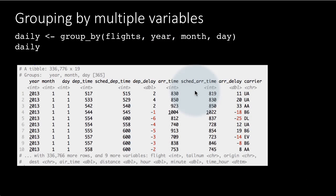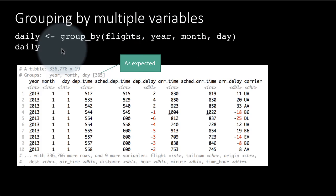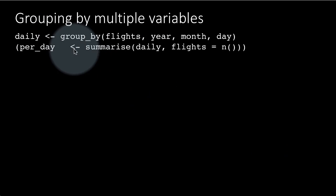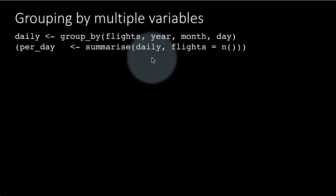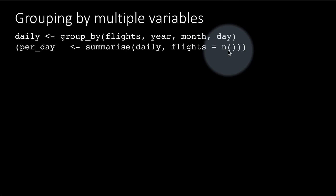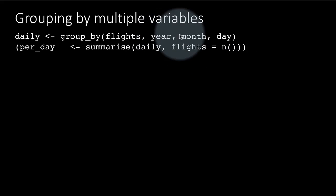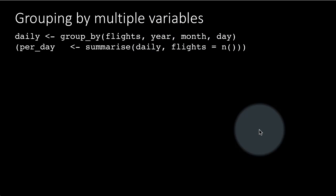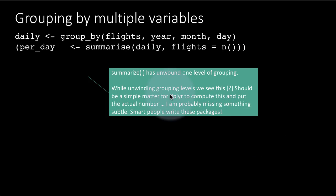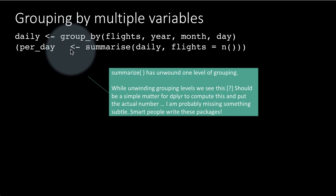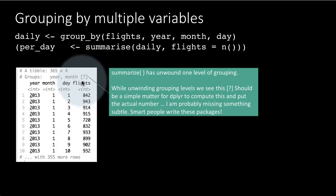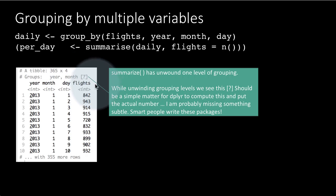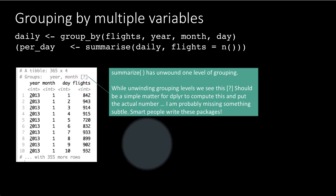Now, grouping by multiple variables — we've already seen this. 'daily' is grouped by year, month, and day and of course there are 365 groups. You can find the per-day flights by saying: per_day equals summarize(daily, flights = n()). Remember n() tells you how many rows there are, so for each day it finds out how many flights there are. After summarize, one level of grouping is unbound — per_day is now grouped by year and month alone, because there is only one row per day, so day has been unbound.